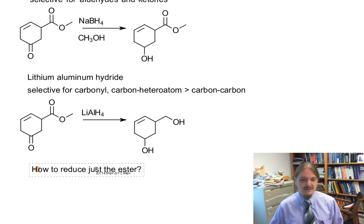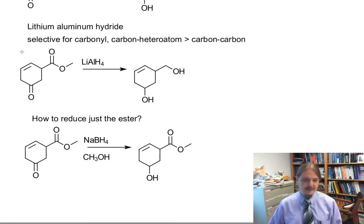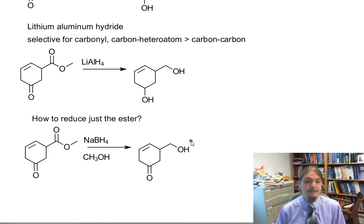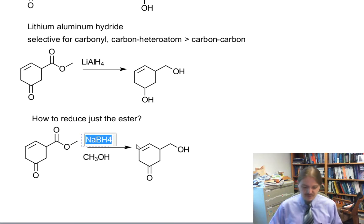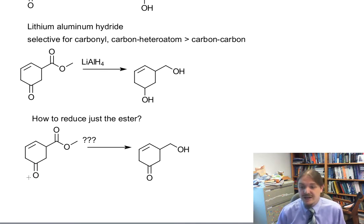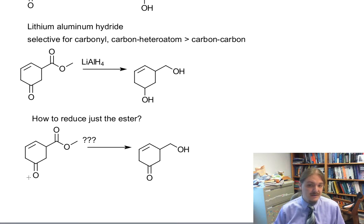The question then remains: what do I need to do to reduce just the ester and not the ketone? Of the three types of reagents I just talked about, none of them will do it. There is a way, and it involves something called a protecting group. What you'll ultimately want to do is temporarily prevent the ketone from reacting — change it into another functional group, reduce the ester, and then regenerate the ketone. That's going to be a topic for another video. This wraps up the series of videos on the reduction of carbonyl compounds. Thanks for watching.